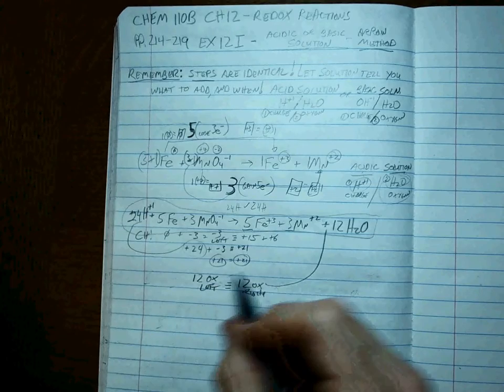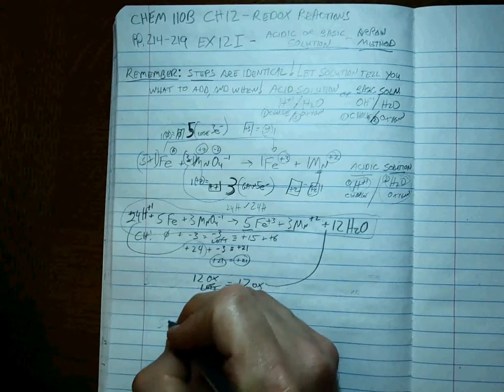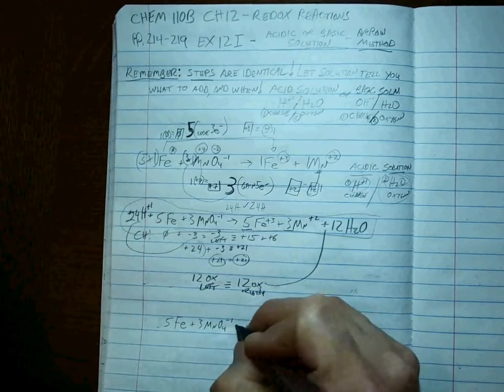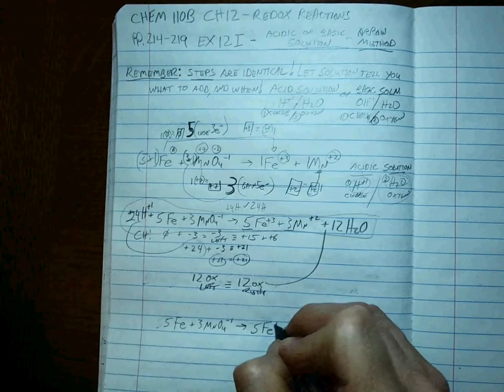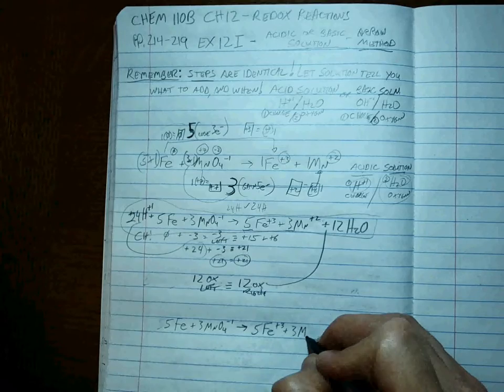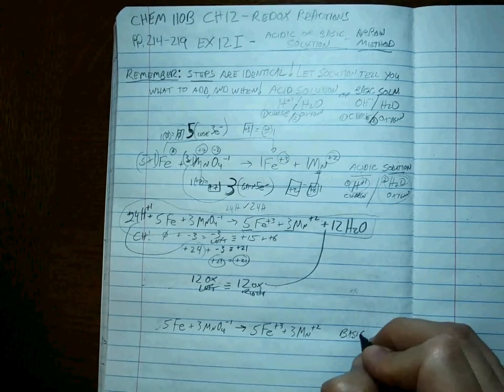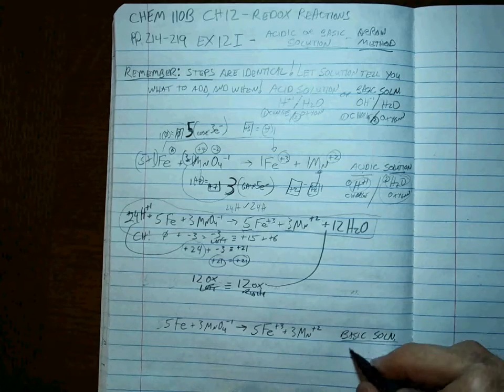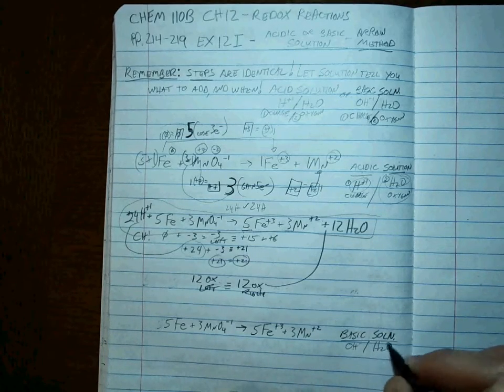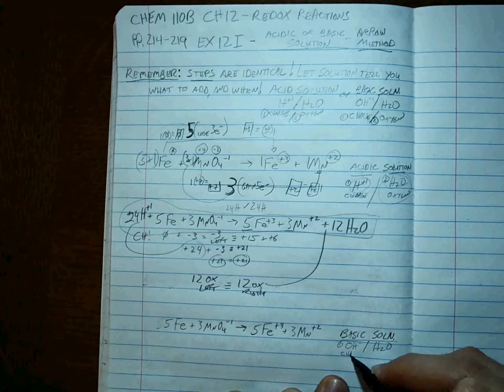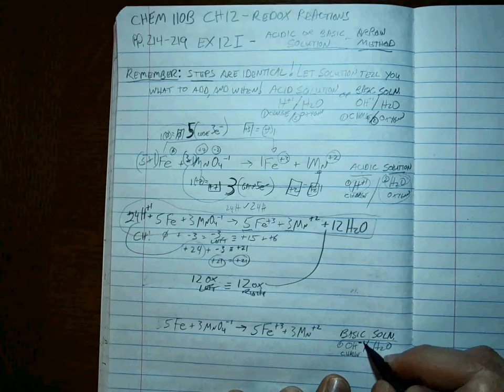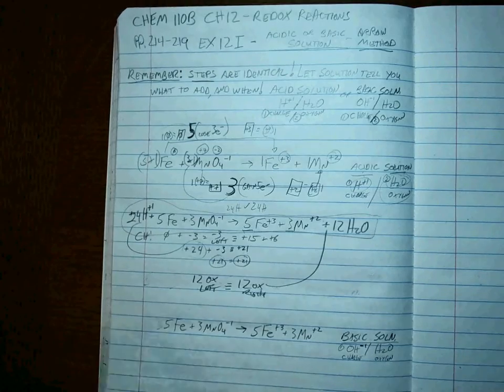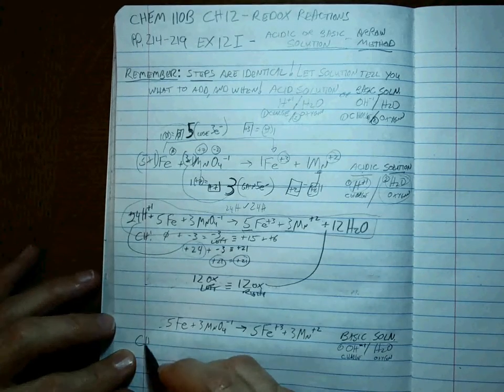Our stepwise got us down to 5 Fe's plus 3 MnO4 minus 1's going to 5 Fe plus 3's plus 3 Mn plus 2's. And now we're in basic solution. So what do we know about basic solution? Basic means hydroxide, solution means water. So we do this first to balance the charge using hydroxides, using minus 1's, and then we use water to balance the oxygen second.